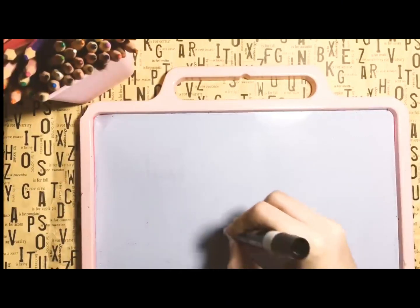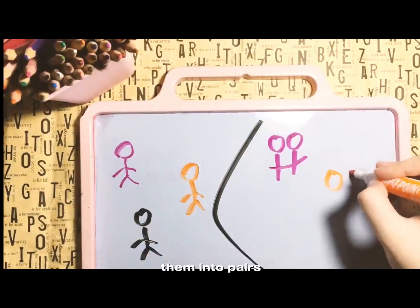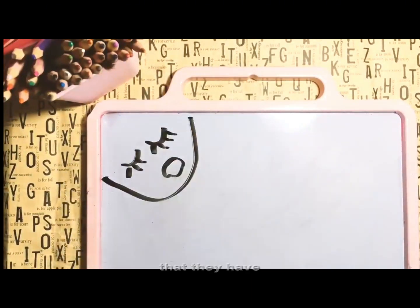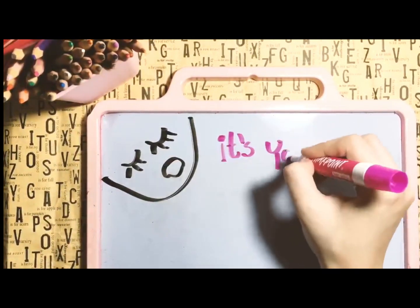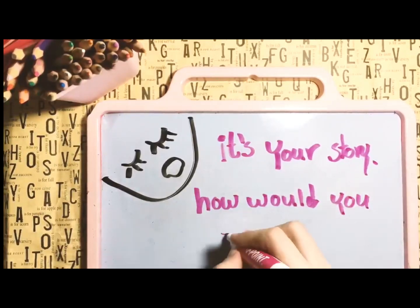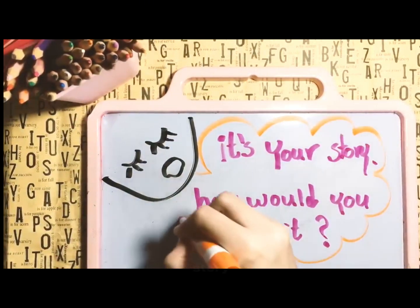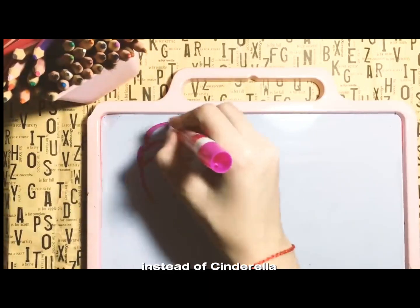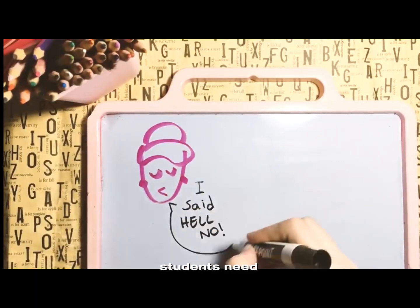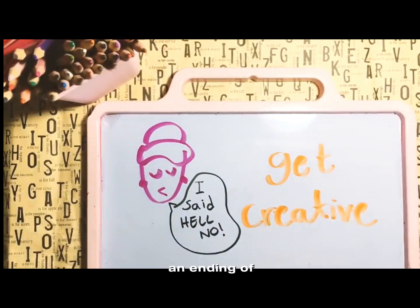Ask the students to pick one. If you have a small class, students should work individually; if not, divide them into pairs or groups. Explain to them that they have to come up with an alternate ending to the story. This will require students to review the whole story in English and use their imagination to come up with a new and different ending — so instead of Cinderella getting married to Prince Charming and living happily ever after, students expand their creative skills and imagine the same story with an ending all their own.